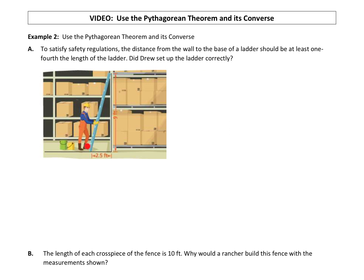So here's Drew. He's got on some nice orange overalls. Here is the ladder, and we can see that he's setting the ladder up 2.5 feet away from the wall. That's where the base of the ladder is, and that's reaching a height of 9 feet. So the first thing we're going to do is find the length of the ladder. We have enough information to do that.